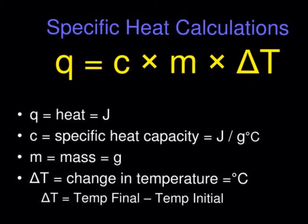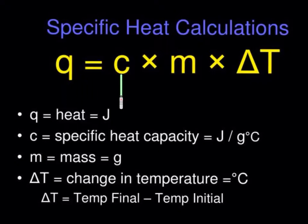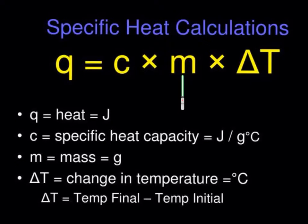Reviewing the equation: Q is our heat lost or gained, measured in joules, calories, kilojoules, or kilocalories depending upon the phrasing of the problem. C is the specific heat, typically measured in joules per gram degree Celsius or calories per gram degree Celsius — whichever you use depends on the problem. M is the mass of the substance, measured in grams or kilograms.